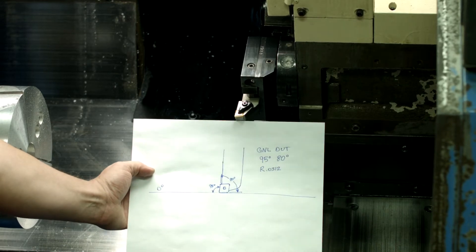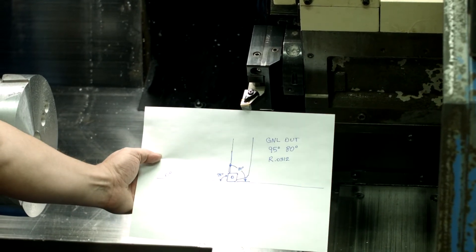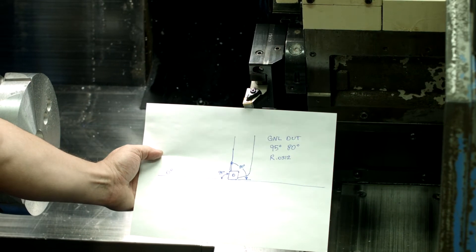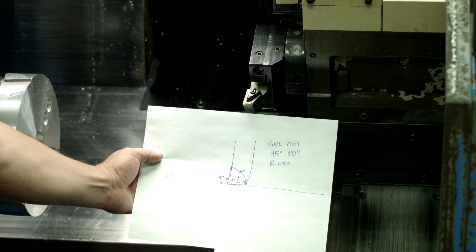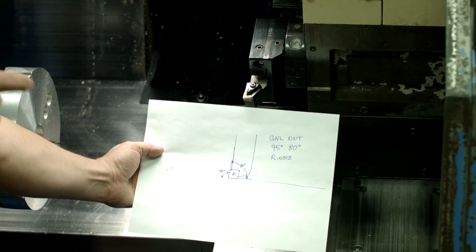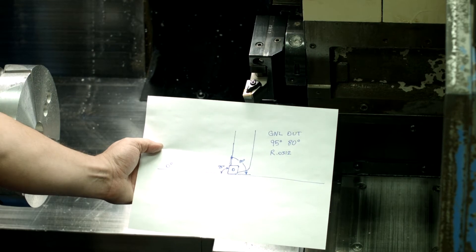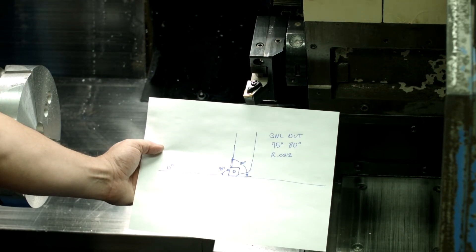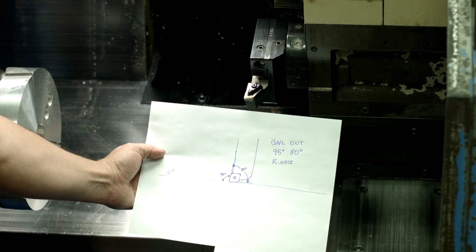This is what the tool data looks like. The first angle is 95 degrees, the second angle is 80 degrees, and it's called a general out, and we have a radius of 0.0312.